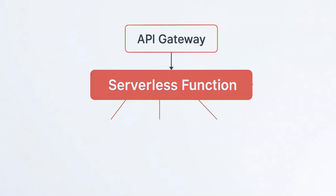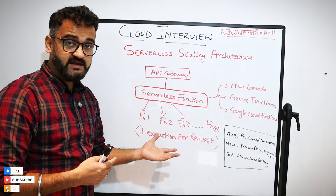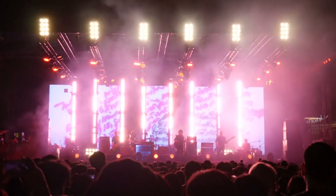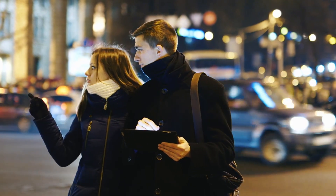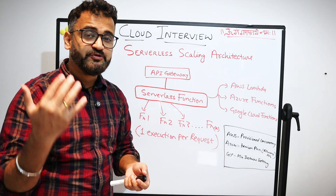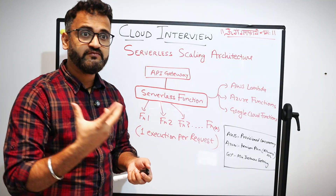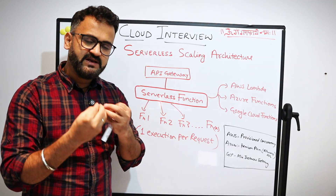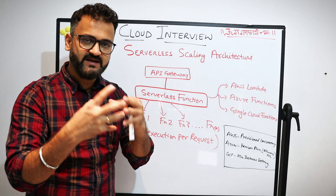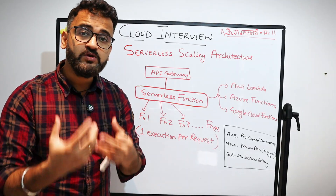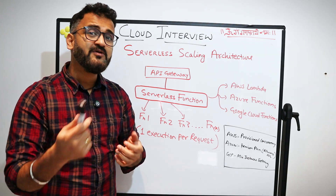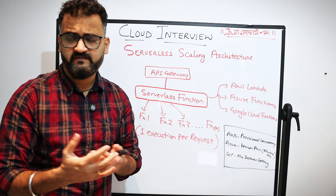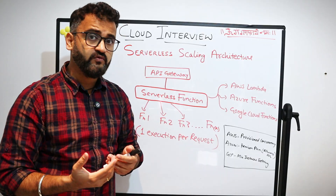Generally, you'll have an API gateway or HTTP request sending requests to the serverless function. But what if suddenly there is a surge — like a New Year's party ending and a long queue of people requesting cabs? This is where cold start versus warm start becomes critical. Every serverless function needs to spin up its own environment and resources. If you have a very low latency requirement, you cannot afford a cold start because it adds lag and latency.